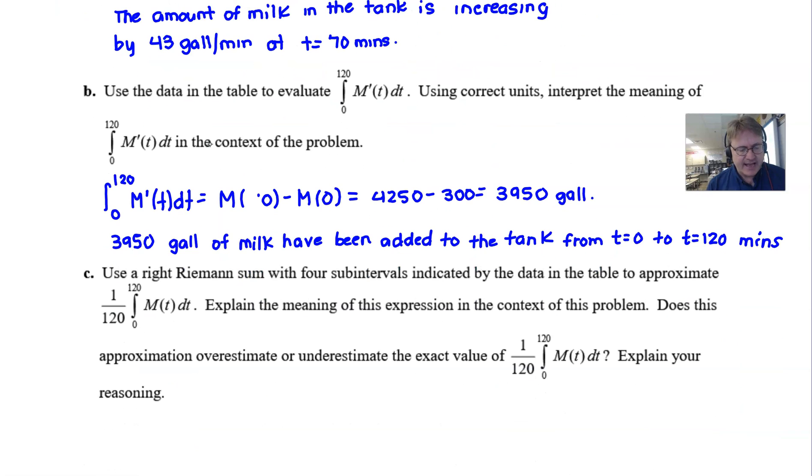Let's read part c here, our last part. Use a right Riemann sum with four subintervals indicated by the data in the table to approximate 1 over 120 times the integral from 0 to 120 of M of t. Explain the meaning of this expression in the context of the problem and then does this approximation overestimate or underestimate the exact value of that definite integral? Explain your reasoning. All right, well it may have been a while or two since we've done our work with Riemann sums, so we're going to review that.